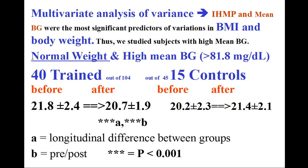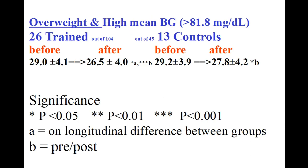Multivariate analysis of variance showed that training (IHMP) and mean BG were the most significant predictors of final decreases in BMI and body weight. We report IHMP effects in 40 normal weight subjects with high MBG (≥81.8 mg/dL) in comparison with 15 controls. IHMP produced significant pre/post and longitudinal body weight and BMI decreases. Twenty-six trained overweight subjects with high MBG (≥81.8 mg/dL) show significant pre/post and longitudinal decreases in MBG after training in comparison with 13 controls; P<0.001.